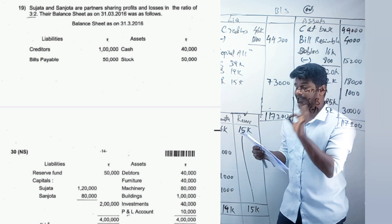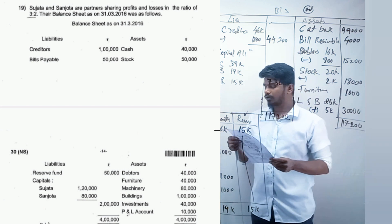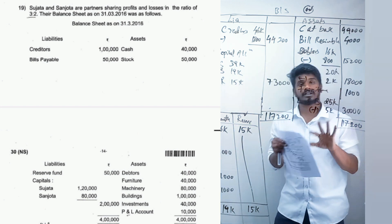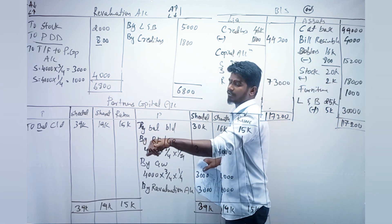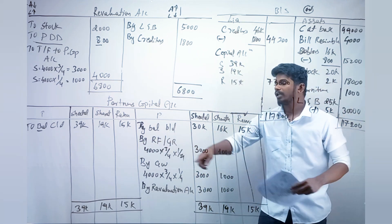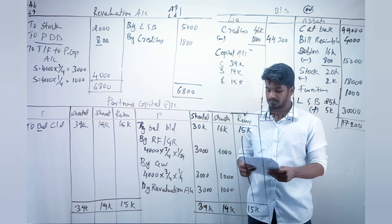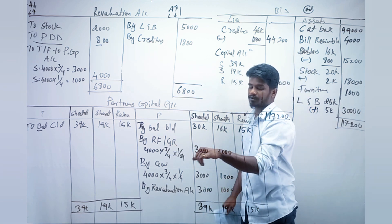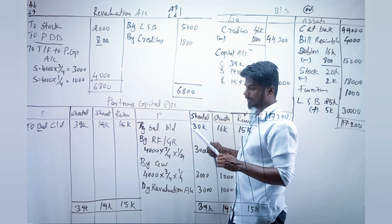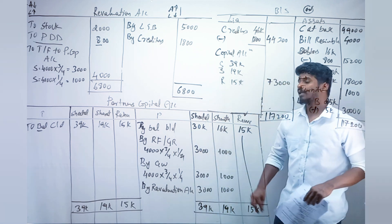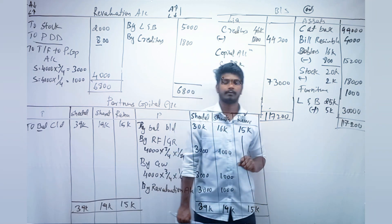Look for reserve fund or general reserve on the liability side of the balance sheet. If any amount is found, share it to the old partners in their old ratio. Whatever amount comes, credit each old partner accordingly.